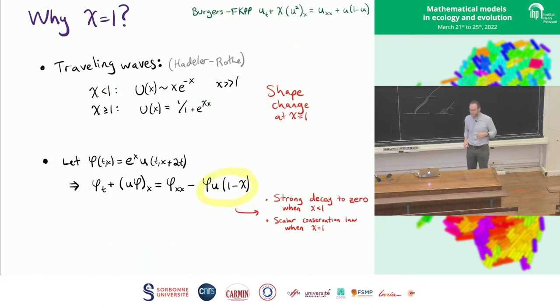So why chi equals one? You see the behavior in the traveling wave that Hadeler-Rothe computed, but what are some other ways you can see it? So one is you can see that the profile of the traveling wave changes. So when chi is greater than or equal to one, you can actually compute it explicitly, and you see that it has purely exponential decay at infinity. When chi is less than one, you get essentially the kind of profile that you see for Fisher KPP, which is xe to the minus x. It's not purely exponential, it has that linear term out front.